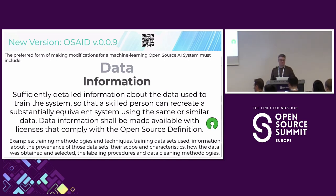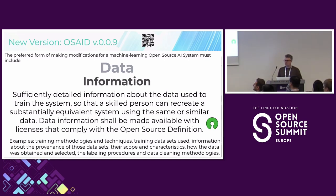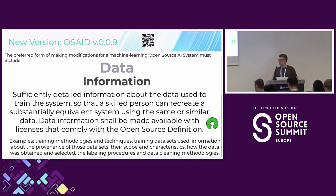So there is this tension, and we're trying to strike a middle. We want to protect groups like LLM 360, TII, Eleuther AI — organizations doing research that want and need large amounts of data in order to build these systems. That's where the balance is. That's where this position on data information comes from.